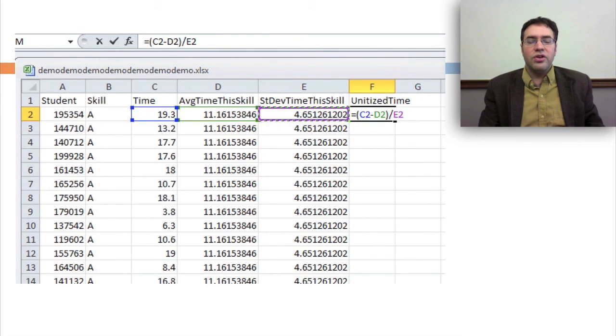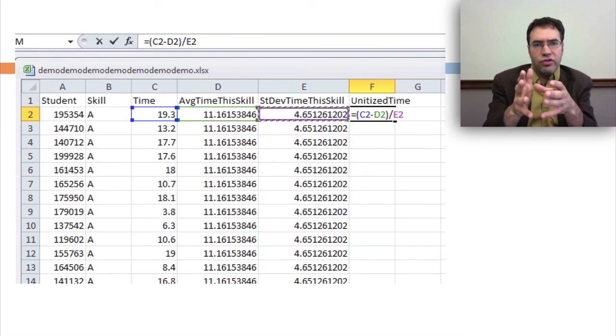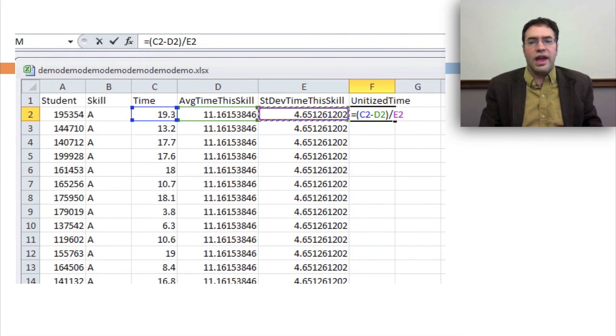And finally, you create unitized time by taking the current time minus the average time for the skill divided by the standard deviation. And this gives you how much faster or slower the current student action is than the average time for this skill.